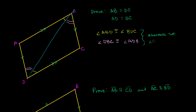We also see that both triangles — triangle ADB and triangle CDB — share this side in common, which is obviously equal to itself. We've just shown that both triangles have the pink angle, then the shared side, then the green angle. So we've shown by angle-side-angle that these two triangles are congruent.